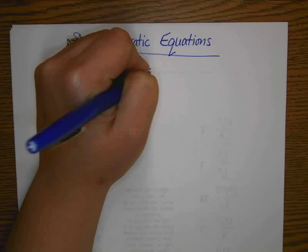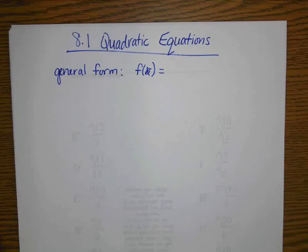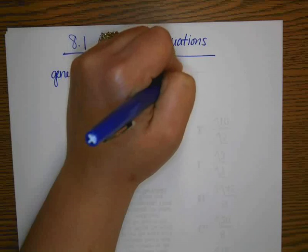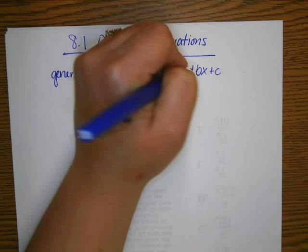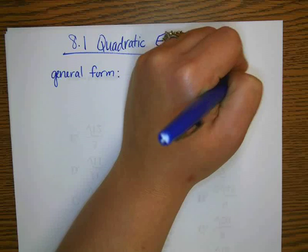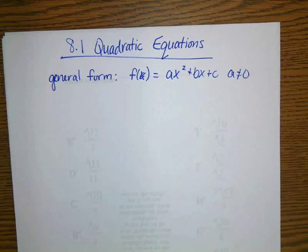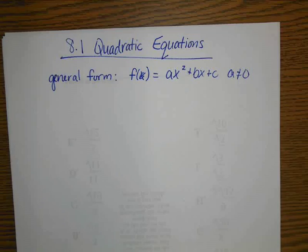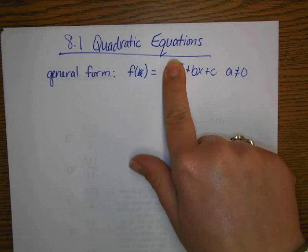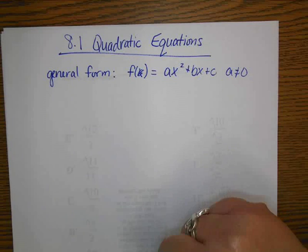The general form of a quadratic equation is f(x) equals ax squared plus bx plus c. And the x squared is what makes it a quadratic, so obviously a can't be 0. If a was 0, this term would be gone, and we'd be left with a linear equation.